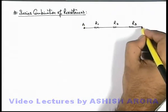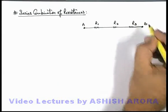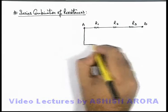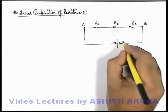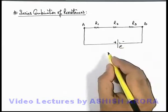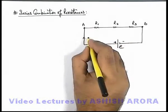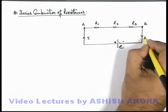Say the terminal ends of this combination are A and B, and say if this combination is connected across a battery of given EMF E, then we can say obviously due to this combination a current i will flow through the circuit.